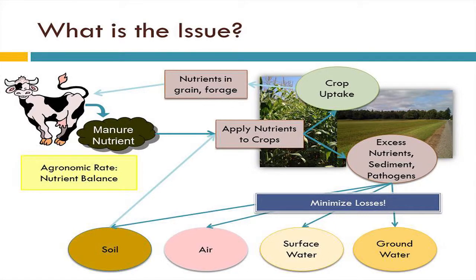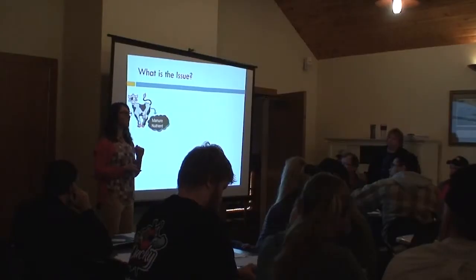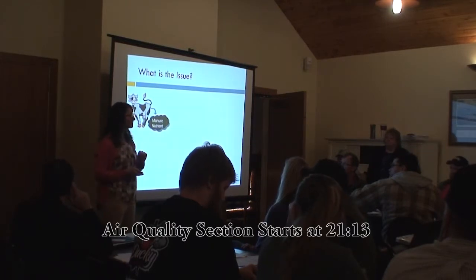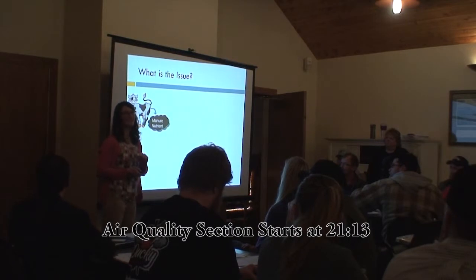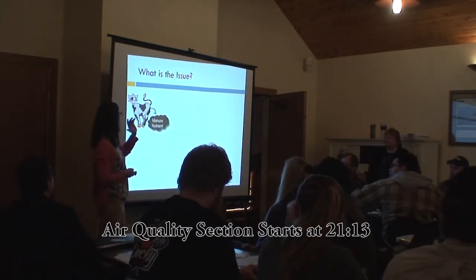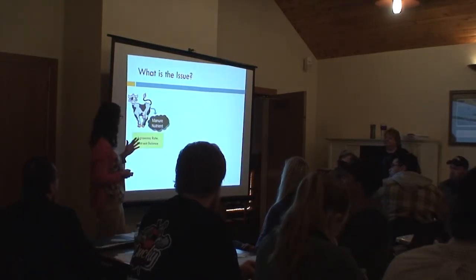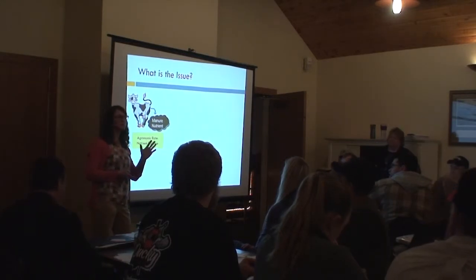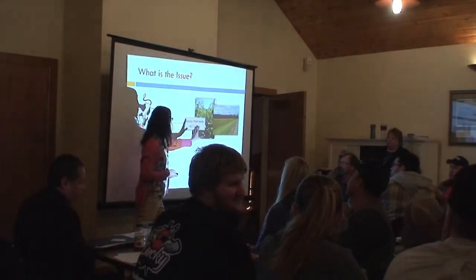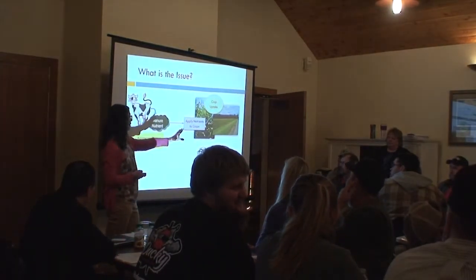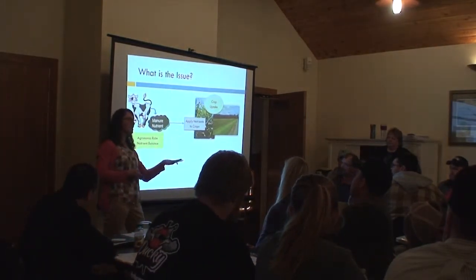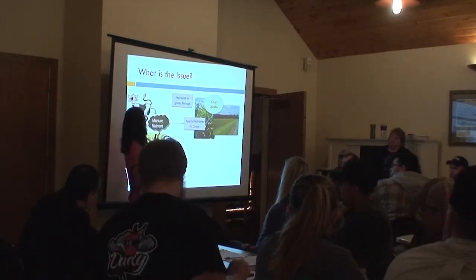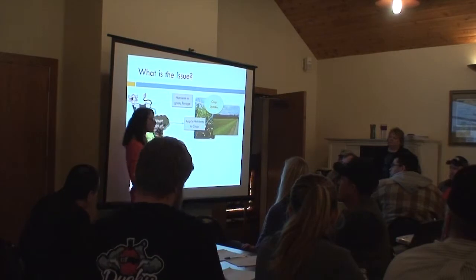What is the issue? Your cows make a lot of manure — I always joke that sometimes milk is a byproduct of your daily manure production. So we've got a lot of that, about 100 pounds per cow on average. And then we've got this agronomic rate, this nutrient balance piece. We apply nutrients to crops, and in a perfect world the crops take up exactly what you put on, and those nutrients come back in your system in a closed loop.